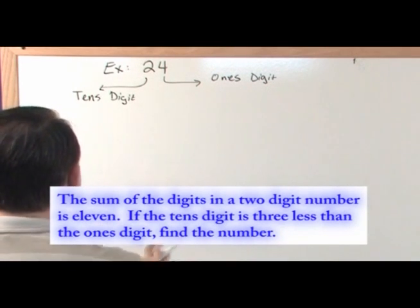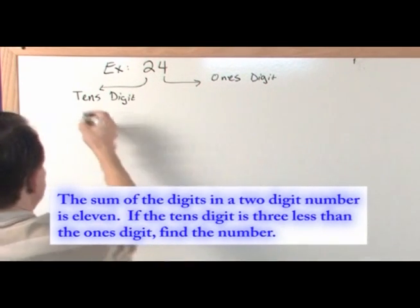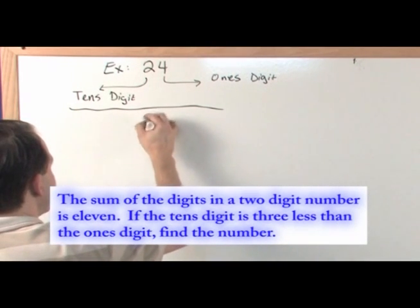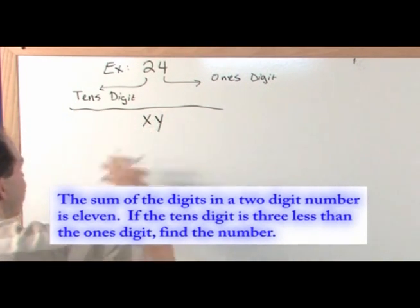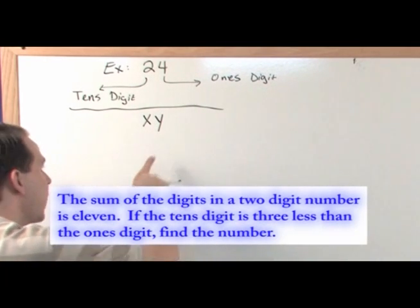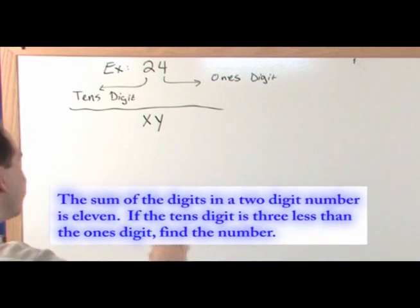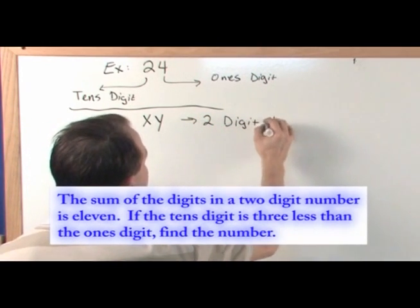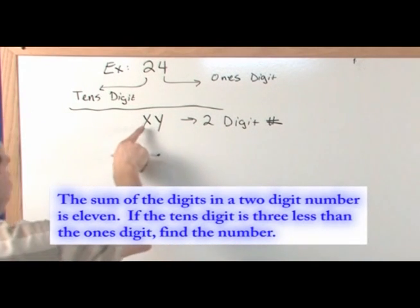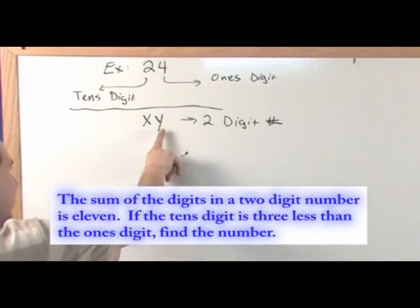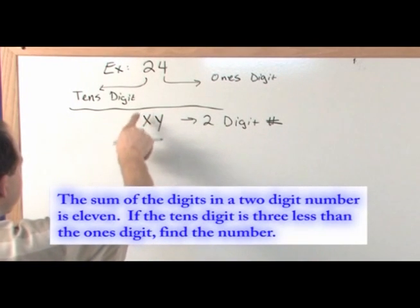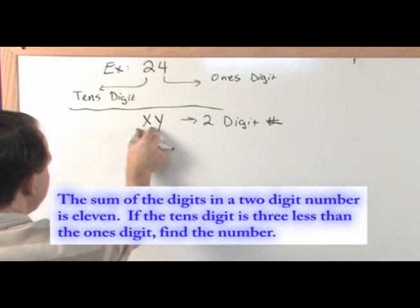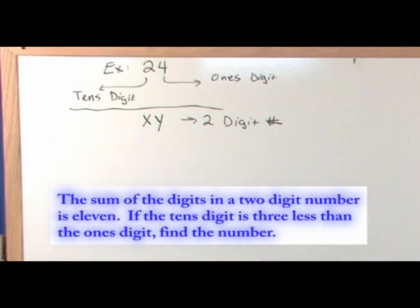In this problem, we don't know what the number is, but we know it's a two-digit number and we're trying to find what these digits are. So we're going to say the digits look like x and y — this is not x times y. The tens digit is x and the ones digit is y. These are not multiplied together — it would be like 24, 32, or 47.